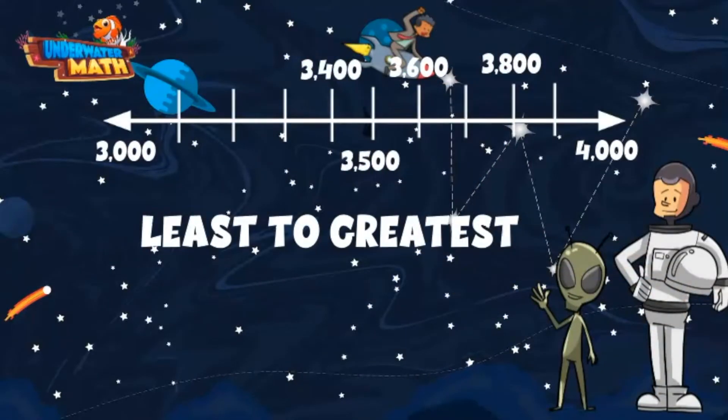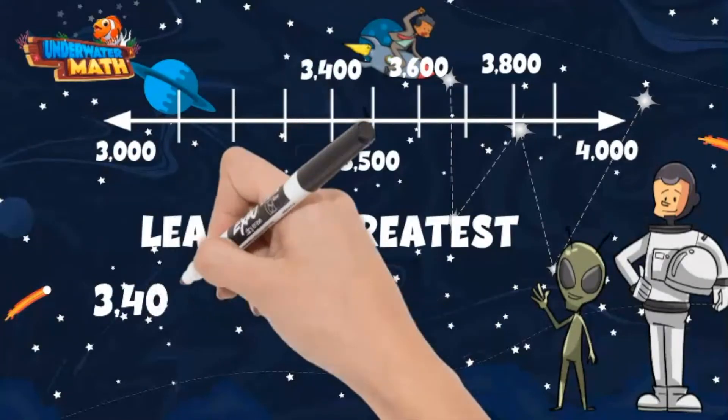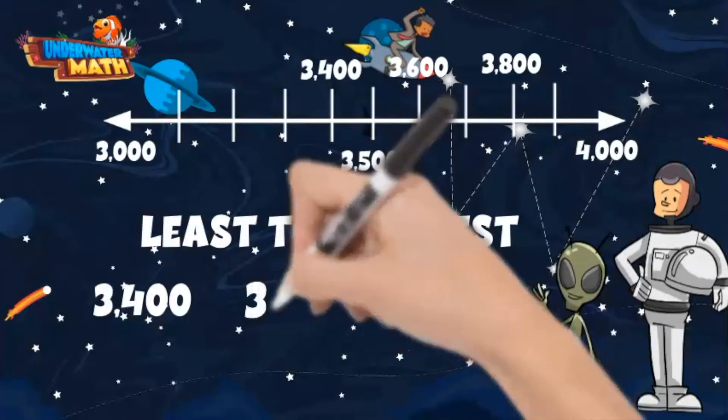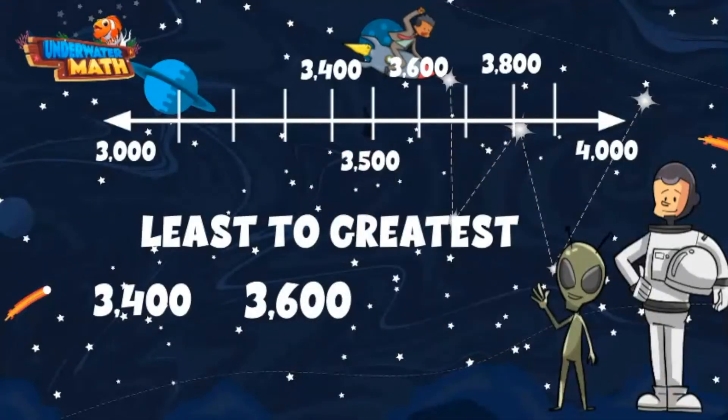Our smallest value, as we can see on our number line, is 3400. Next up is 3600. Finally, we have 3800.